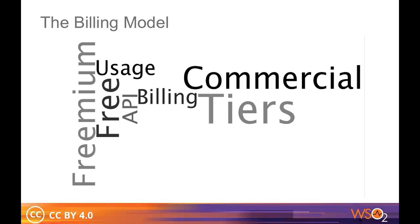A billing engine will typically contain all the billing plans that you have in your enterprise. In the billing engine, you will specify the number of requests you will allow, as well as the rates per day, per month, and what will happen when you go above the specified limit. Each billing plan will have a one-to-one mapping with a tier. Tiers are also used for throttling purposes, specifying how many requests an API can handle at a time.